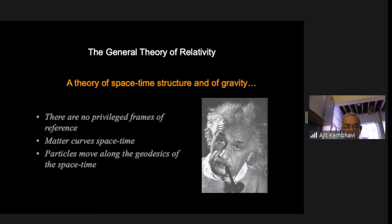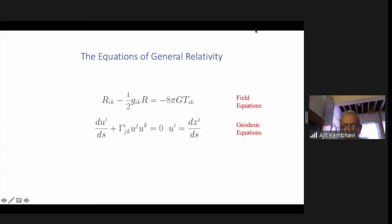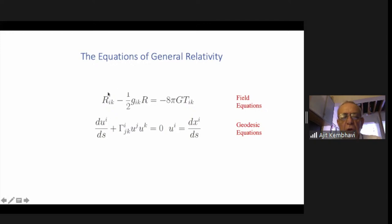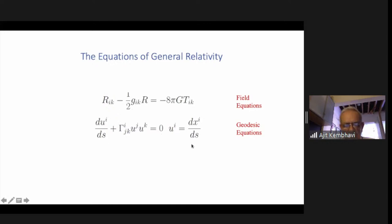So he went to discover the general theory of relativity. In special relativity you have inertial frames, which you don't have in general relativity. Matter curves space-time, and particles move along the geodesics of space-time. His equations — a set of 10 non-linear tensorial equations known as Einstein's field equations — have the properties of matter and energy on the right and the metric tensor on the left. Once you solve this and get the metric, you can solve the geodesic equation, which tells you how particles and light will move.